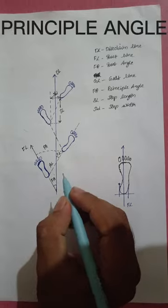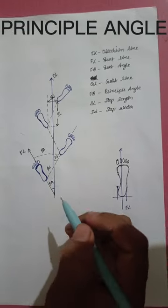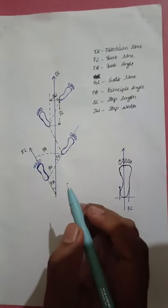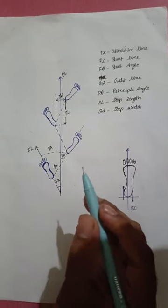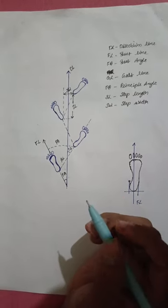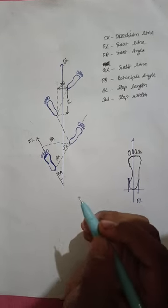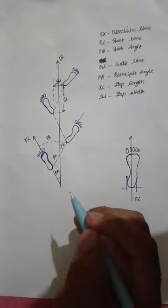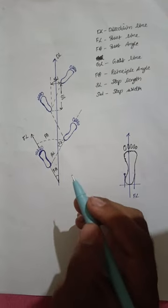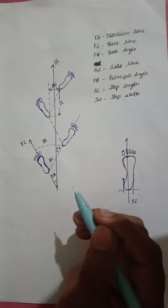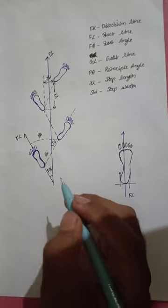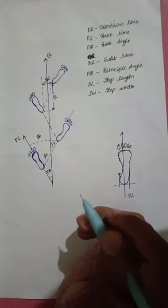Next, the principle angle. This is the angle between the foot lines of the two feet and is the sum of the two foot angles. The principle angle will vary depending on the deformities in the left or right foot.